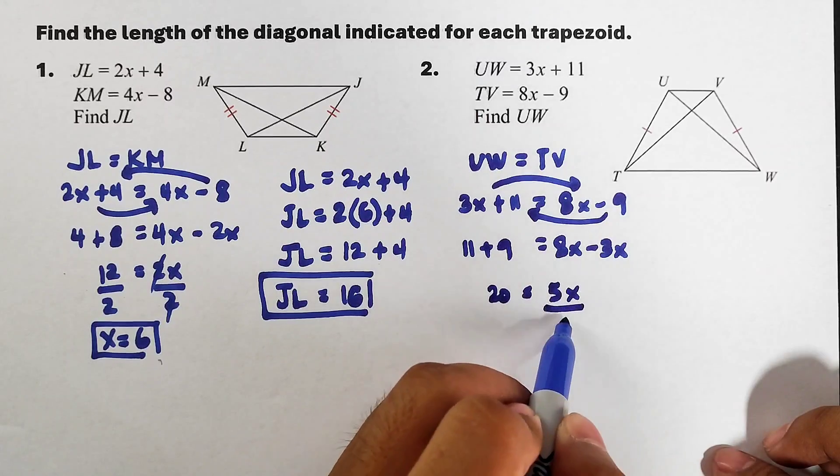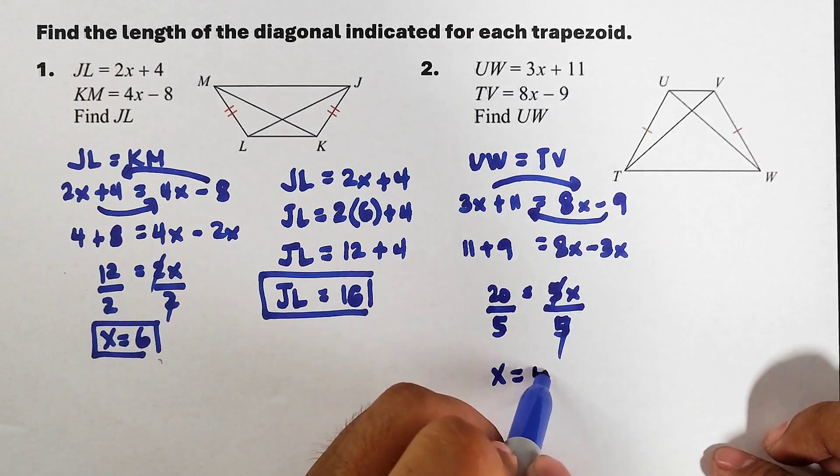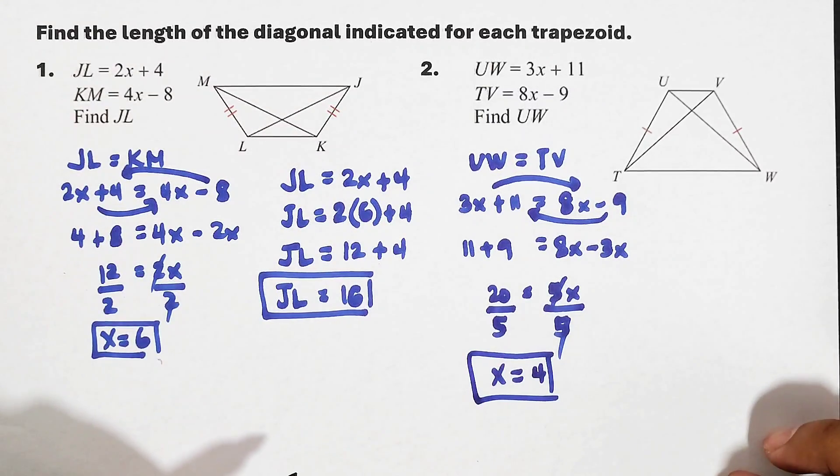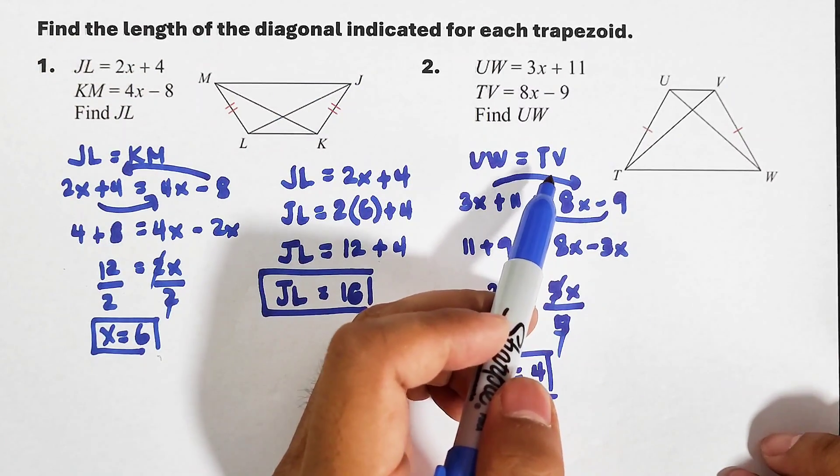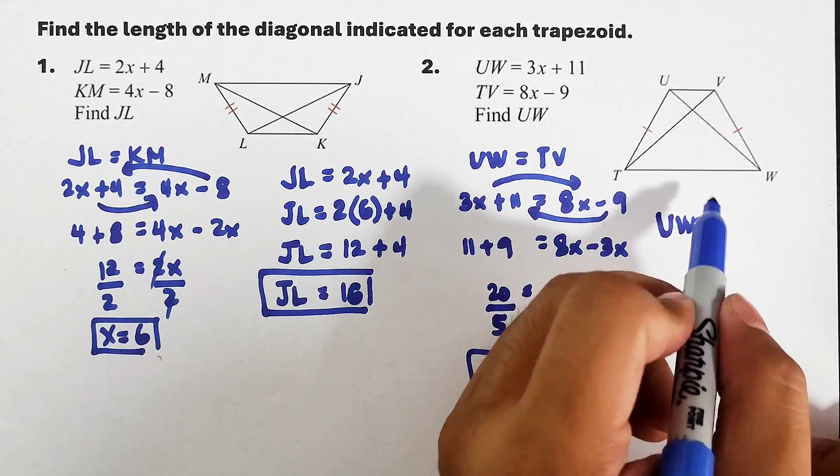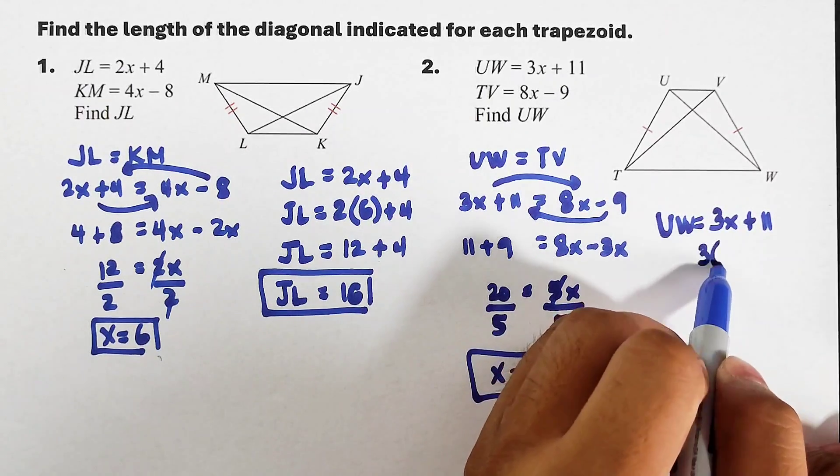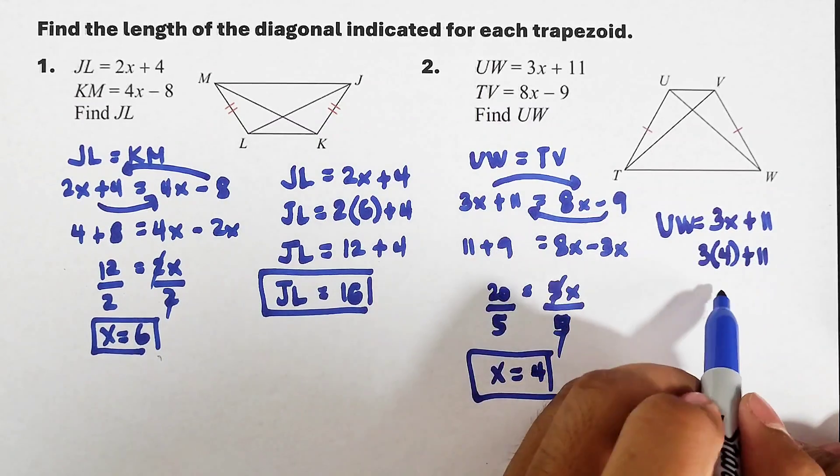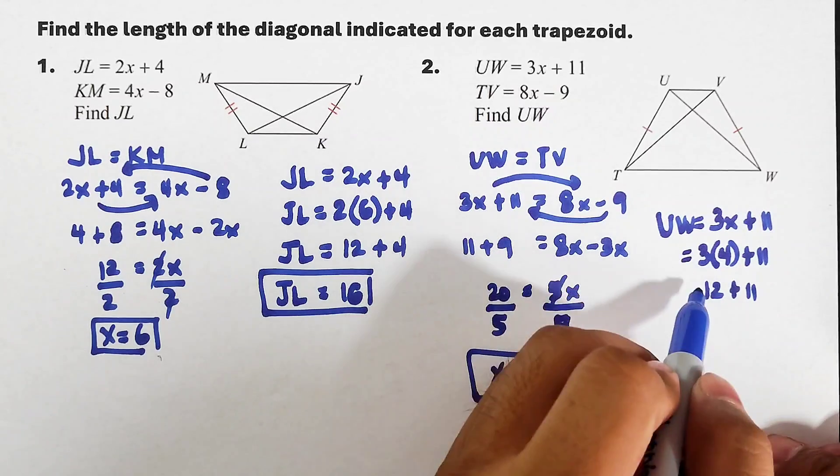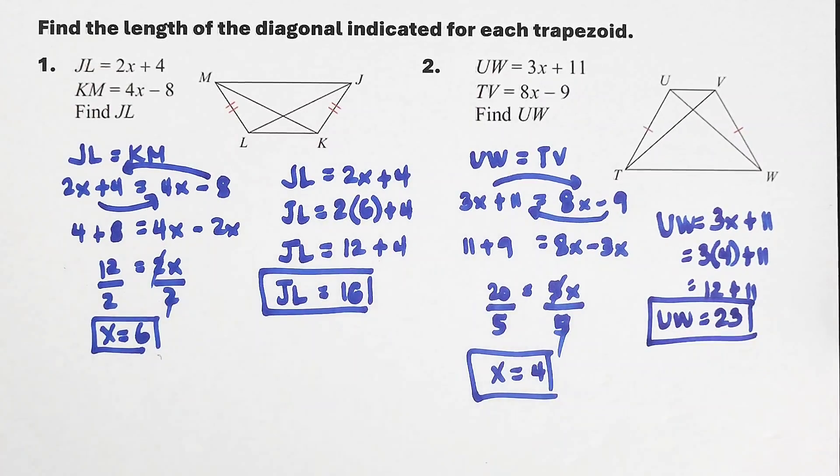Here we have 11. Transpose 9, that is plus 9. 11 plus 9 is 20. Here this is 5x. Divide by 5, divide by 5. Cancel. Your x equals 20 divided by 5, which is 4. And this is the answer, guys. Now let's go with the problem: find UW. UW is represented by 3x plus 11. Substitute: we have 3 times 4 plus 11. This is 12 plus 11, so as you can see, UW is equal to 23 units. And as for the measurement of the other diagonal, which is TV, the answer is also 23.